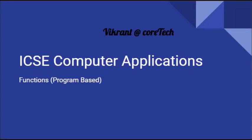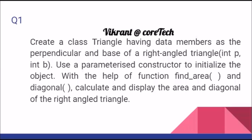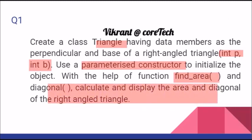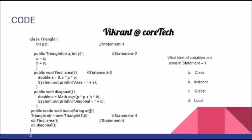This is a program-based question from the functions chapter for the Computer Applications ICSE examination. The question involves a class called Triangle. The Triangle class consists of data members int p and int b, a constructor, and functions called findArea and diagonal. You have to calculate the area and diagonal and print the result accordingly. The question and code will both be given.